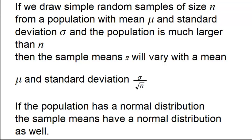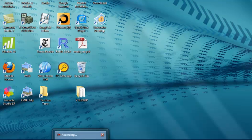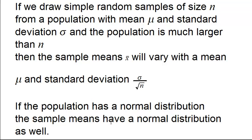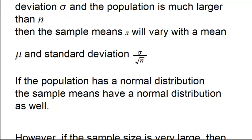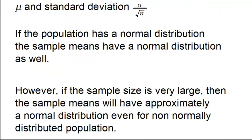Regarding the distribution of the sample means, if the population has a normal distribution, then the sample means will also have a normal distribution. The central limit theorem proved that if the sample size is very large, then the sample means will have approximately a normal distribution, even if the population does not have a normal distribution.